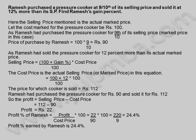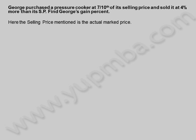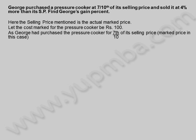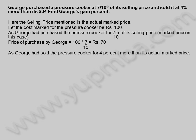Let us see another example. George purchased a pressure cooker at 7 by 10th of its selling price and sold it at 4 percentage more than its selling price. Find George's gain percent. Here the selling price mentioned is the actual marked price. Let the cost marked for the pressure cooker be 100 rupees. As George had purchased the pressure cooker for 7 by 10th of its selling price — marked price in this case — the price of purchase by George is equal to 100 into 7 by 10, which is equal to 70 rupees.